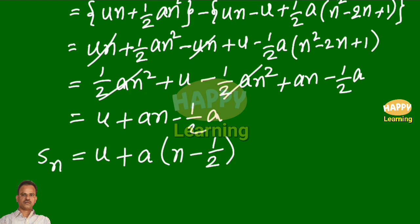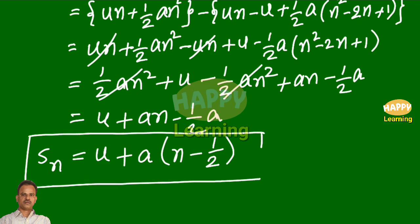So, this is Sn. Sn is equal to u plus a into n minus half. This is the required formula for displacement in the nth second — that is from t equal to n minus 1 to t equal to n. This is the total derivation.